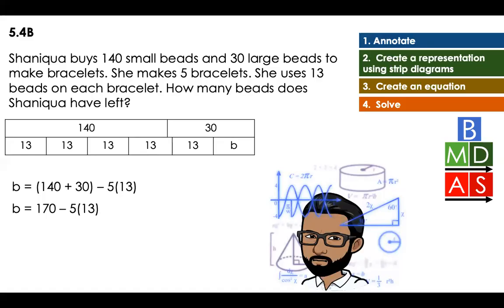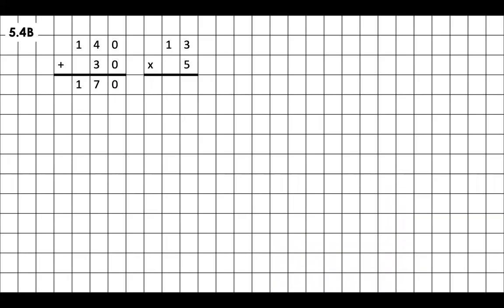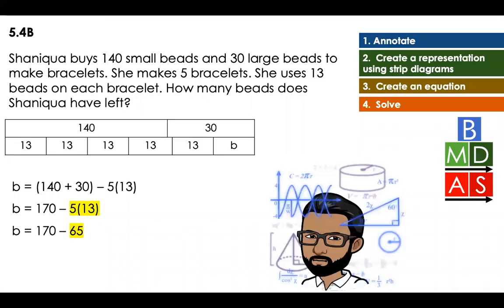Am I going to solve for the subtraction? No, I'm going to solve for the multiplication. 5 times 13. That's going to be equal to—I'm going to make a tic-tac-toe—that's going to be equal to 65. So 65 is what is in total among my five bracelets that she's making.